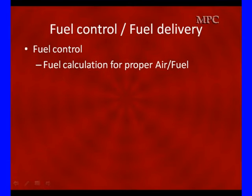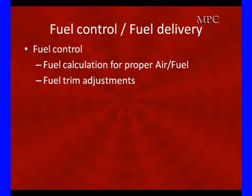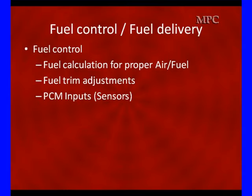Now it's time to start talking about Fuel Control and Fuel Delivery. Fuel Control is the fuel calculation for a proper air-fuel ratio. When we make these calculations, if they're wrong, the PCM will make fuel trim adjustments. We're going to talk about why these can be wrong and exactly how we look at them. We need to be aware of the input sensors to the PCM because we can get a diagnostic direction from them. When you take a reading, we want you to get a diagnostic direction from that reading.